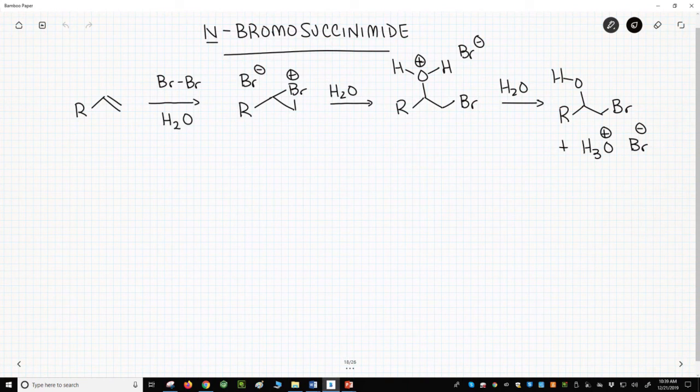On the screen, we have a familiar alkene addition reaction, the synthesis of a bromohydrin by addition of Br2 and water. If you use Cl2, you would get the chlorohydrin by essentially the same pathway. These reactions work fine, but they do have some issues.